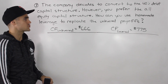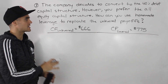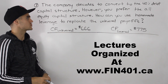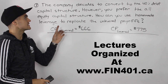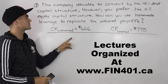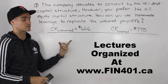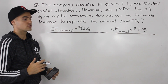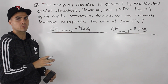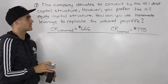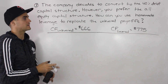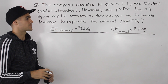Moving on to a third question for this same scenario — it's going to be the opposite of question two. The company decides to convert to the 40% debt capital structure. However, you as a shareholder prefer the all-equity capital structure. How can you use homemade leverage to replicate the unlevered payoffs?